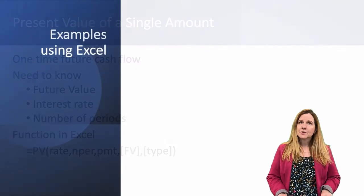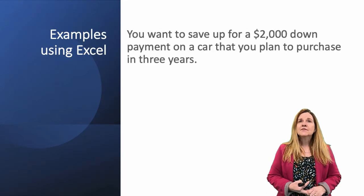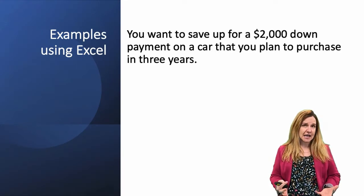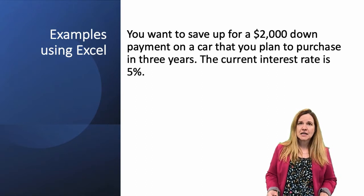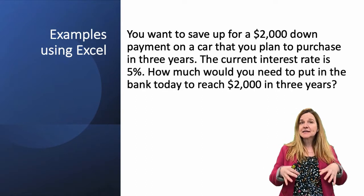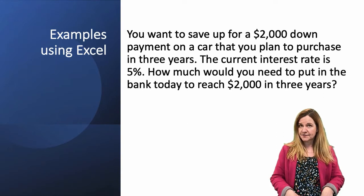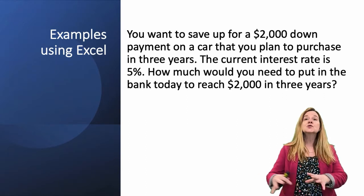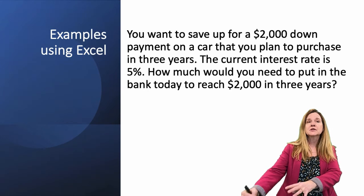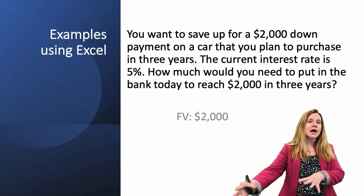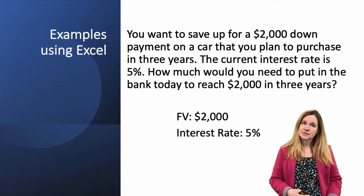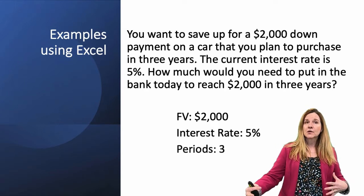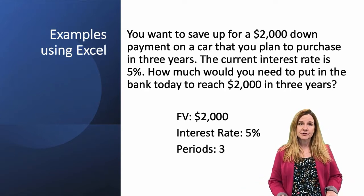Here is the example we'll use. You want to save up for a $2,000 down payment on a car that you plan to purchase in three years. The current interest rate is 5%. How much would you need to put in the bank today — that's why it's present value I'm looking for — to reach $2,000 in three years? The future value is $2,000, the interest rate is 5%, and the period is three years.